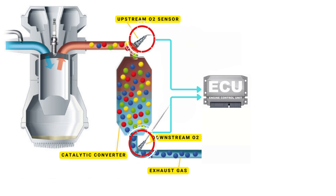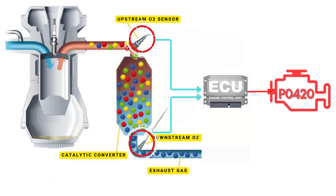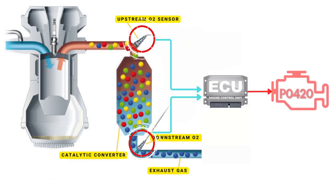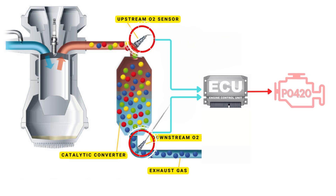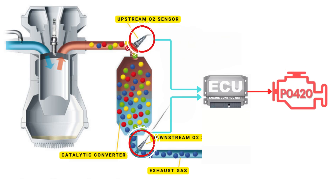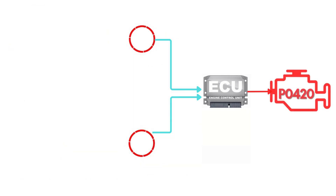If the catalytic converter is functioning properly, the downstream sensor should show significantly lower oxygen content compared to the upstream sensor. The P0420 code is triggered when the ECU detects that both the upstream and downstream oxygen sensors are showing similar readings.